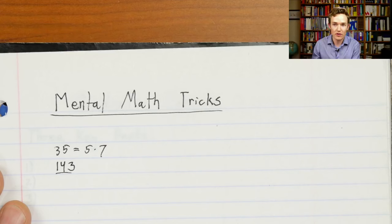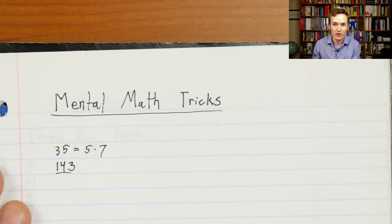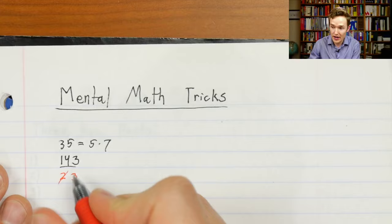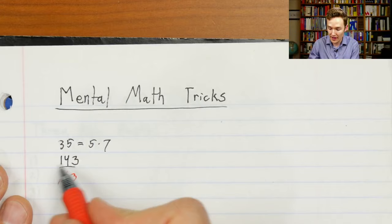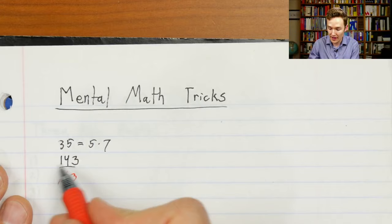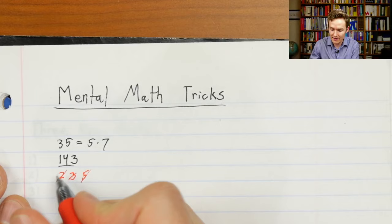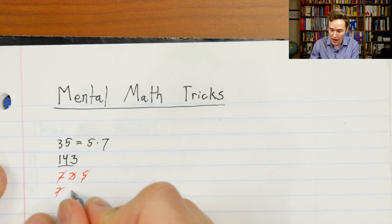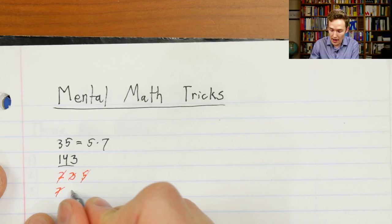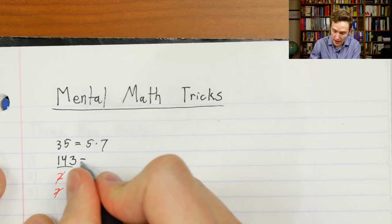Factoring gets annoying as numbers get bigger, especially if there's no obvious small factor. If I asked you to factor 143, the way a lot of us think about it is: 2 doesn't go into it because it's not even; 3 doesn't work because 1+4+3=8, not divisible by 3; 5 doesn't go in; 7, well, 7 goes into 140 evenly as 20 times 7, so that's out. If you go one step further you might see that 11 does go into it — it ends up being 11 times 13. I just love that right now people probably have no idea what any of this has to do with the quadratic formula, but I assure you, it's highly related.